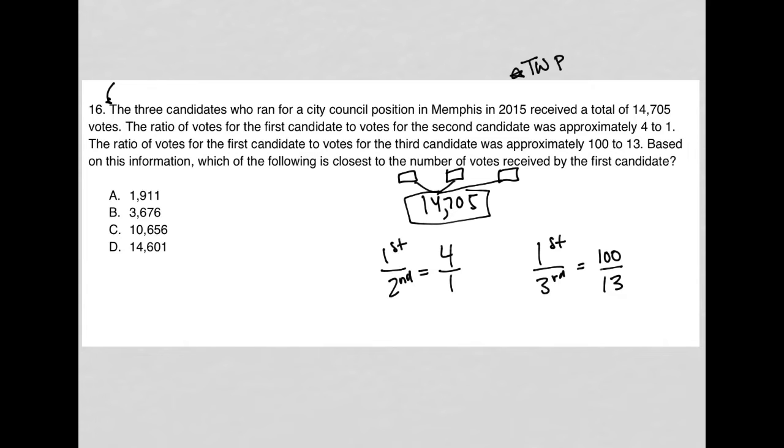I am going to just use a strategy called plug-in answers. How is this useful? Because I actually don't know any information about how many specific votes any candidate received. But all of my answer choices represent the number of votes that the first candidate would have received. And then I can use that information along with this information here to then find my way to an answer that makes sense.